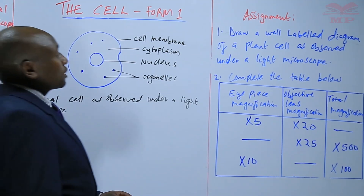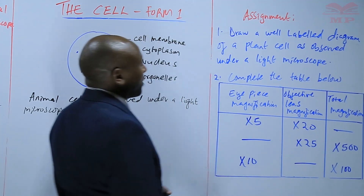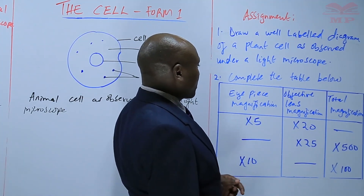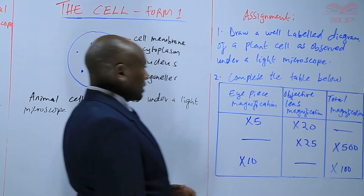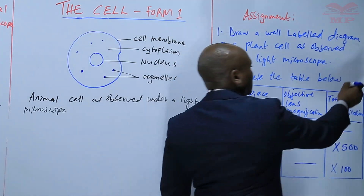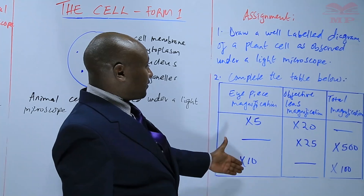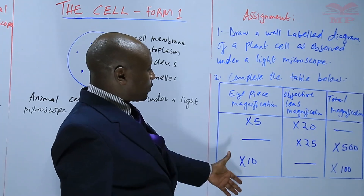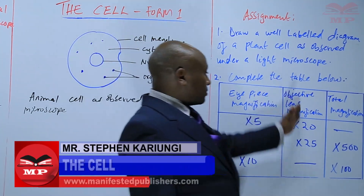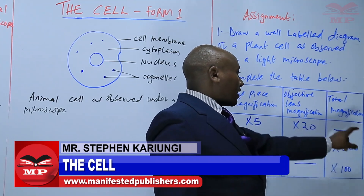Our today's assignment: the first question — draw a labeled diagram of a plant cell as observed under a light microscope. Number two — complete the table below: the first column is eyepiece magnification, the second is objective lens magnification, and you fill in the total magnification accordingly.